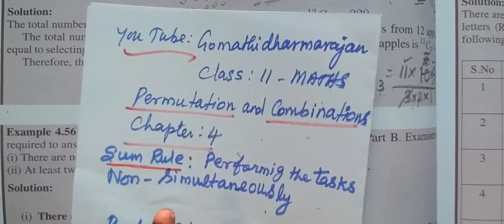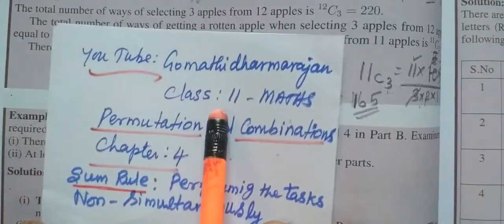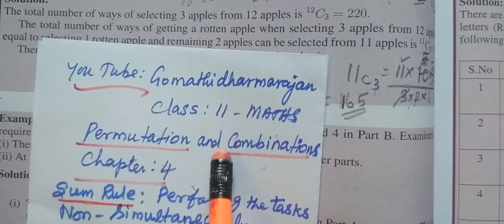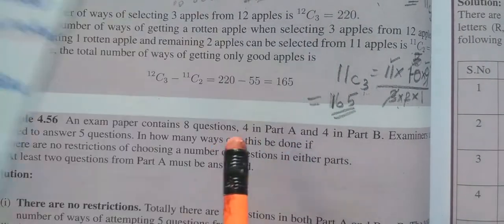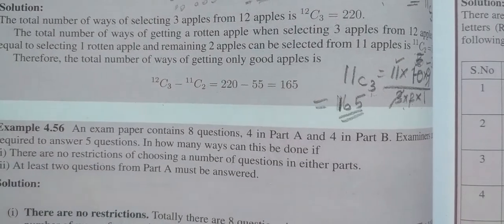Hello students, this is Bhamati Dharma Rajan for Class 11 Math, Permutation and Combination, Chapter 4. Now see Example 4.56.